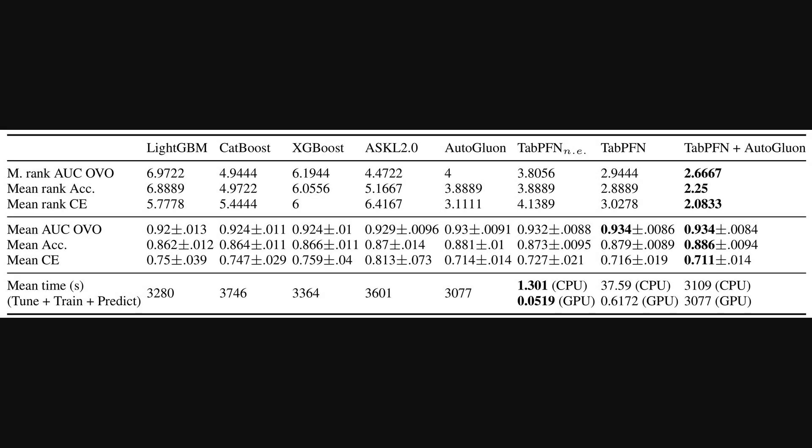Figure five gave us that visual of Tab PFN's speed advantage. Now table one gives us the actual numbers from their benchmark tests on those OpenML datasets. You can see metrics like mean AUC and mean accuracy. Looking at the mean AUC-OVO scores, Tab PFN — especially the standard version — gets around 0.934, which is basically the same as AutoGluon, which also gets 0.934 after an hour. But look at the time: the basic Tab PFN takes just 1.3 seconds on a CPU, or 0.05 seconds on a GPU, while AutoGluon takes over 3,000 seconds. It really drives home that speed versus performance trade-off, and even the standard Tab PFN is vastly faster than traditional methods for similar accuracy.